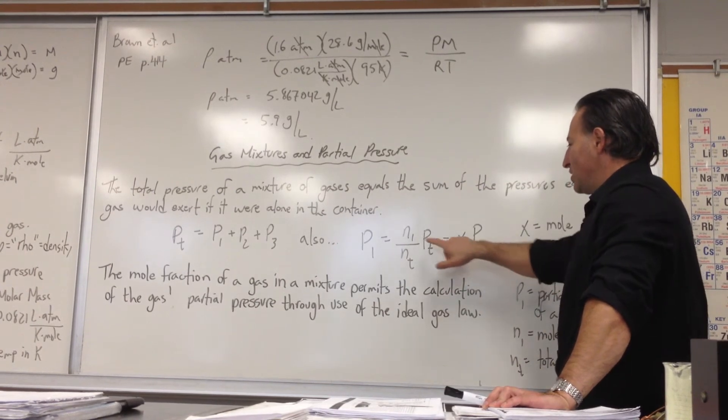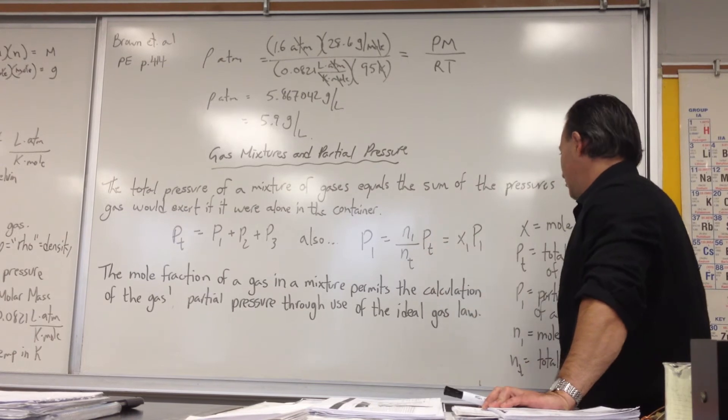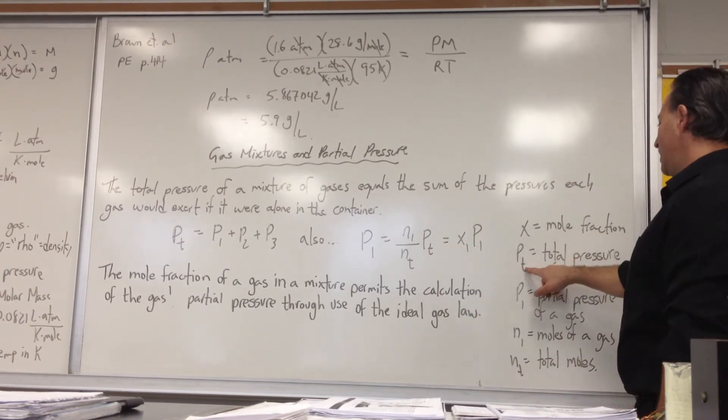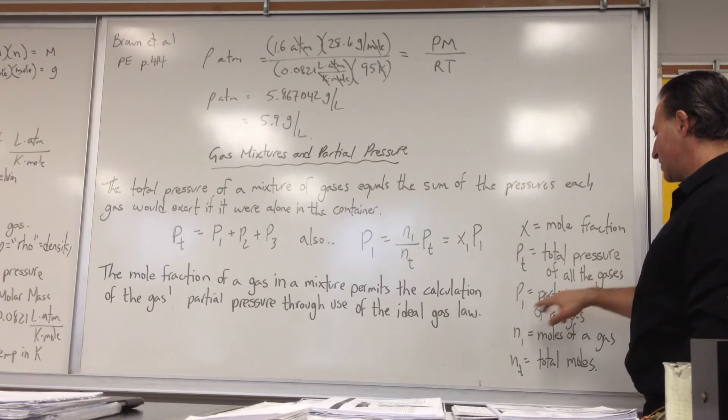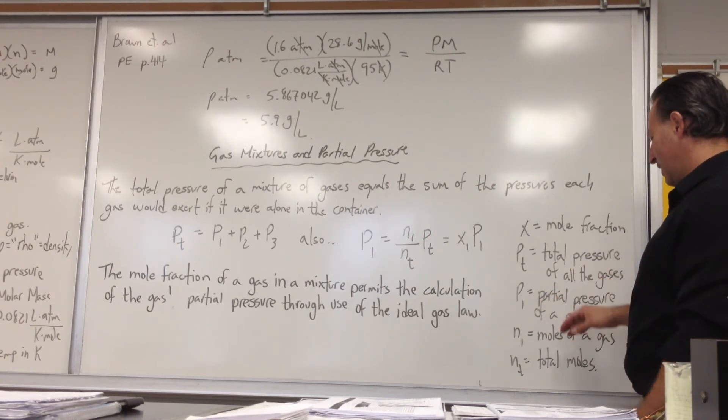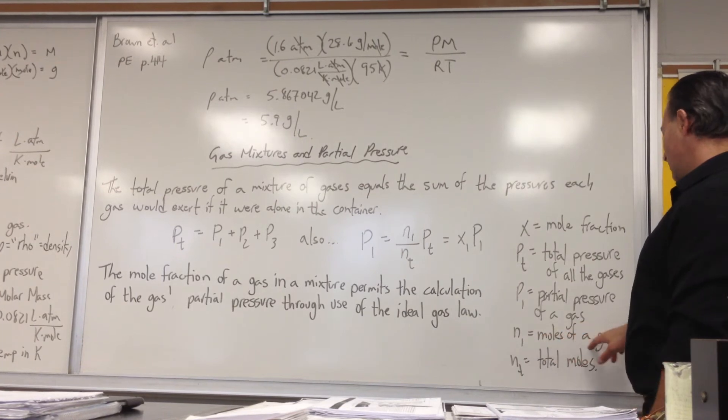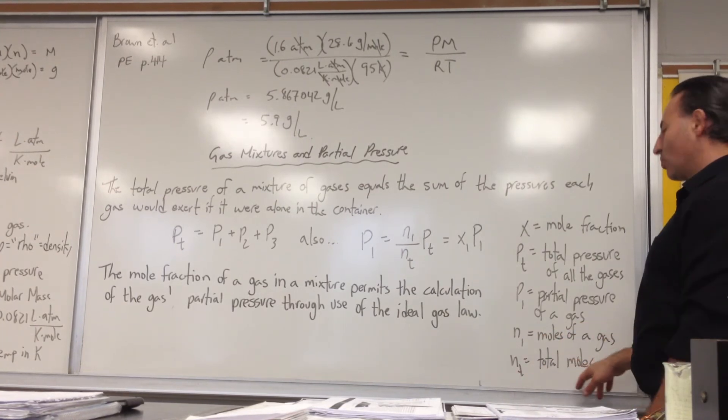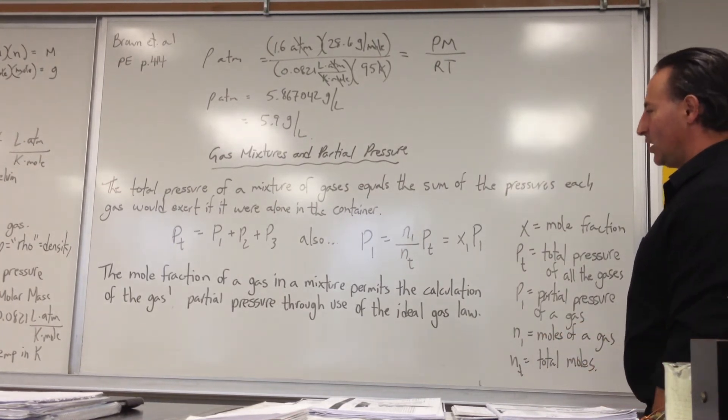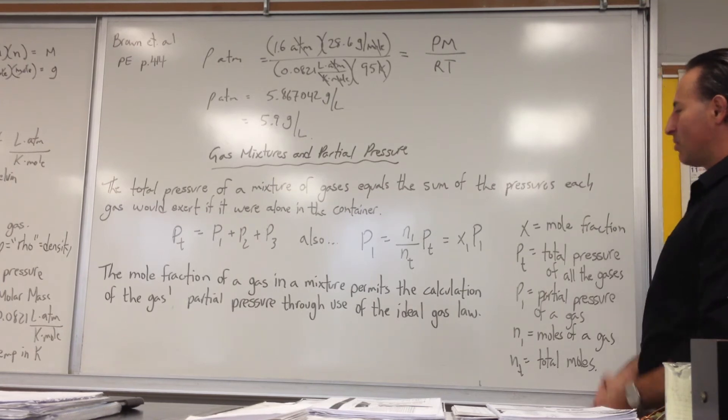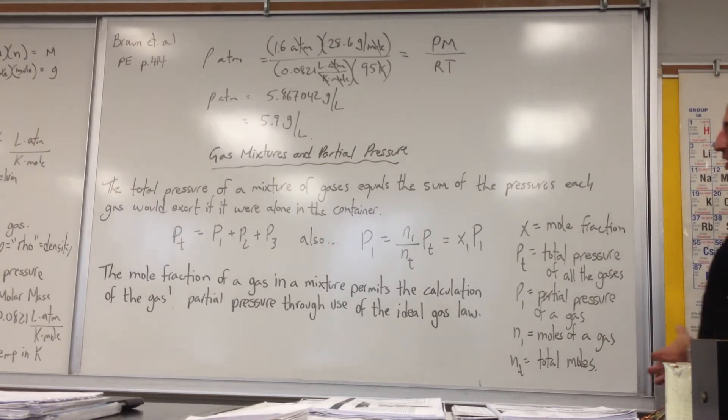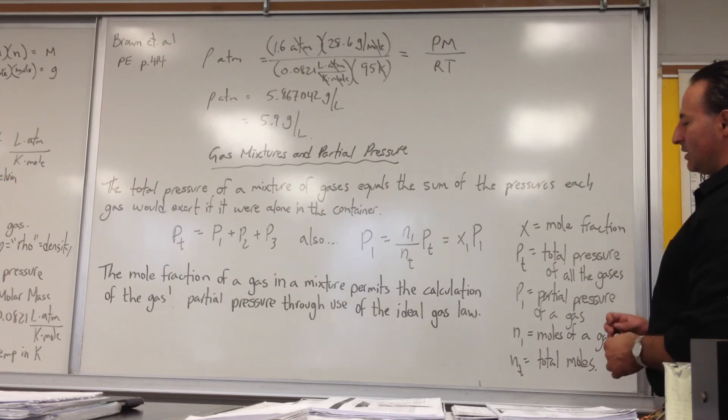The mole fraction is equal to this quantity, N1 over Nt. You see that X is the mole fraction. Pt is the total pressure of all the gases. P1, P sub 1, is the partial pressure of a gas, any given gas. N1 is the moles of that given gas, and Nt is the total moles of all the gases included. So the mole fraction of a gas in the mixture permits the calculation of the gases' partial pressure through the use of the ideal gas law.